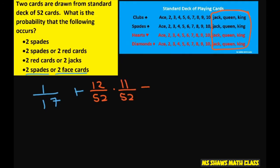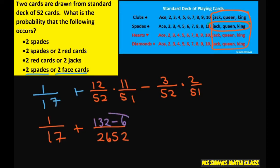However, for the spades, we have three spades that are face cards. So we have to subtract those out: 3 out of 52 times 2 out of 51. I'm glad I saw that. It should be a 51. So this is 1 divided by 17 plus, this is 2652. We're getting that from our previous pages. This is going to be 132 minus 6. So that's going to be 126.